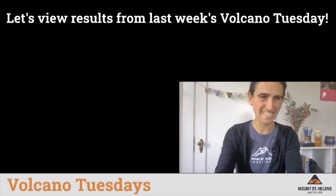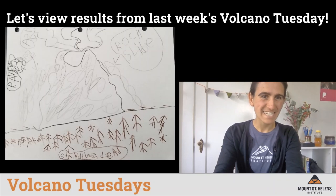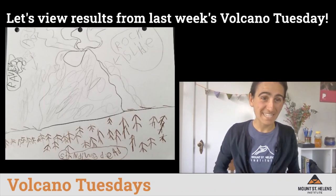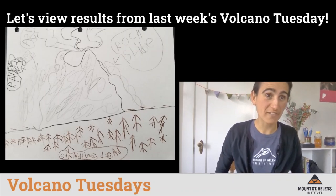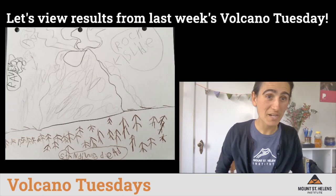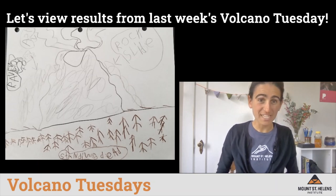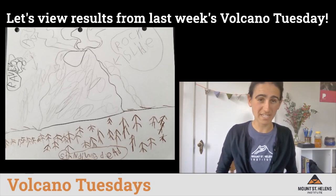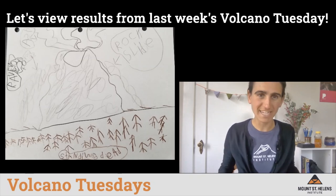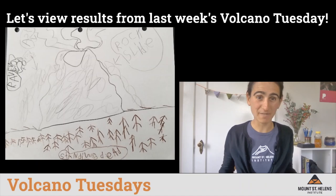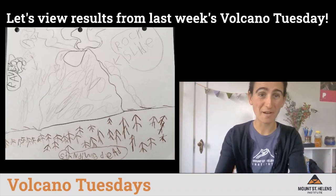Let's flip over and see what this drawing is. This was created by Kinder, who was drawing a volcano. You can see there's a rock slide and the standing dead trees. Kinder did the challenge of drawing the landscape that was affected by the 1980 blast of Mount St. Helens. Wonderful job, Kinder.